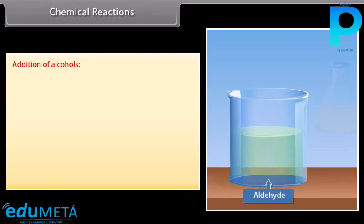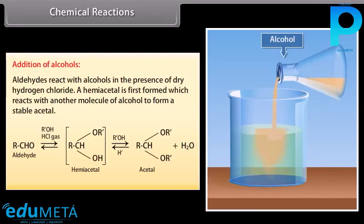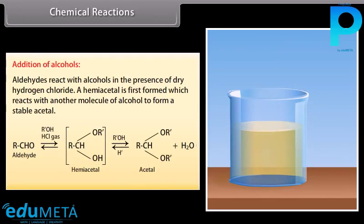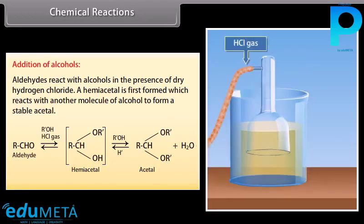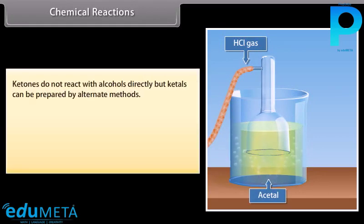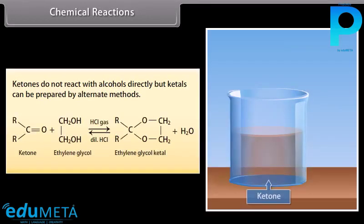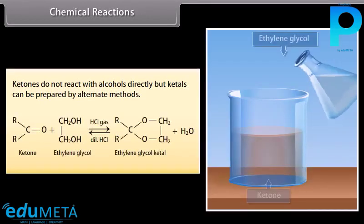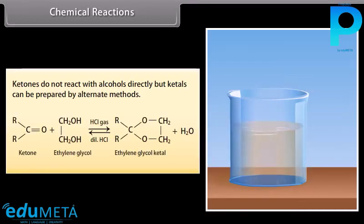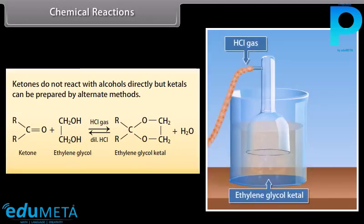Addition of alcohols: aldehydes react with alcohols in the presence of dry hydrogen chloride. A hemiacetal is first formed, which reacts with another molecule of alcohol to form a stable acetal. Ketones do not react with alcohols directly, but ketals can be prepared by alternate methods. Ketone reacts with ethylene glycol in the presence of hydrochloric gas to form ethylene glycol ketal along with water.